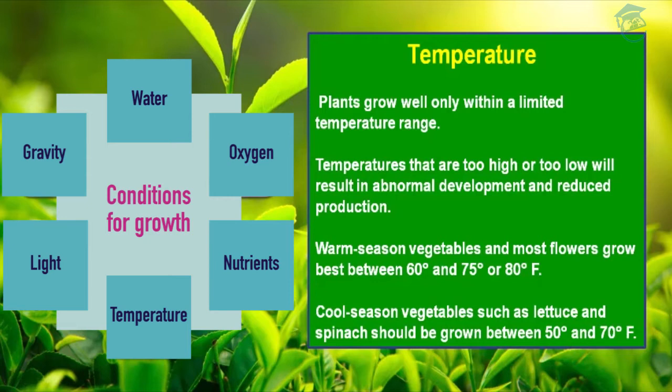A measure of the intensity of heat is called temperature. Plant growth occurs in a fairly narrow range of 60 to 100 degrees Fahrenheit. Temperature directly affects photosynthesis, respiration, and transpiration — which is the loss of water — as well as absorption of water and nutrients. The rate of these processes increases with increasing temperature. Soil temperature also affects water and nutrient uptake.